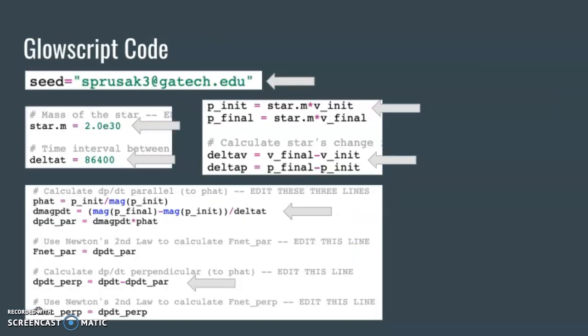This is the code I used for the computer model. I began by copying the starter code into GlowScript. From there, I made the changes necessary to properly construct the simulation. The arrows point to each of the changes I made. To start, I needed to change the seed line and replace it with my personal school email. By doing this, it ensures that the star has a unique trajectory.